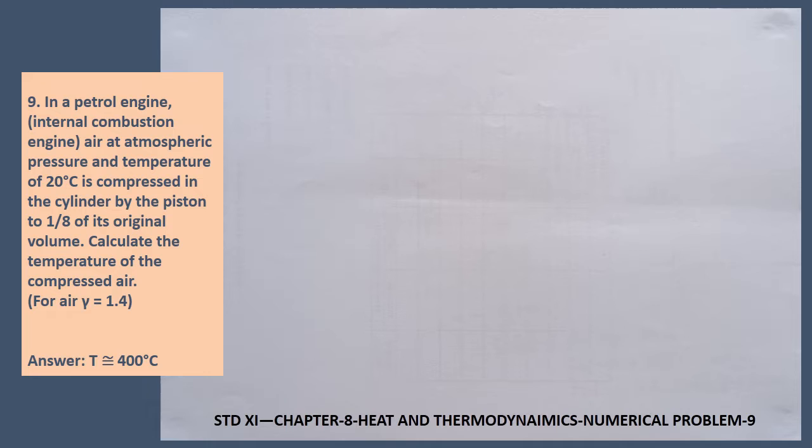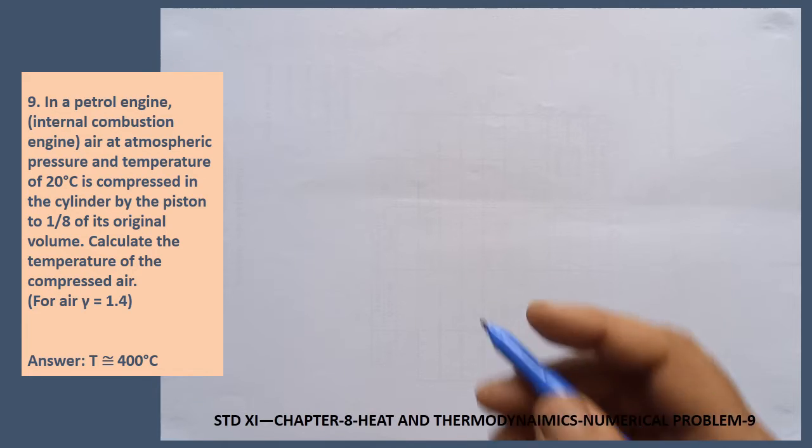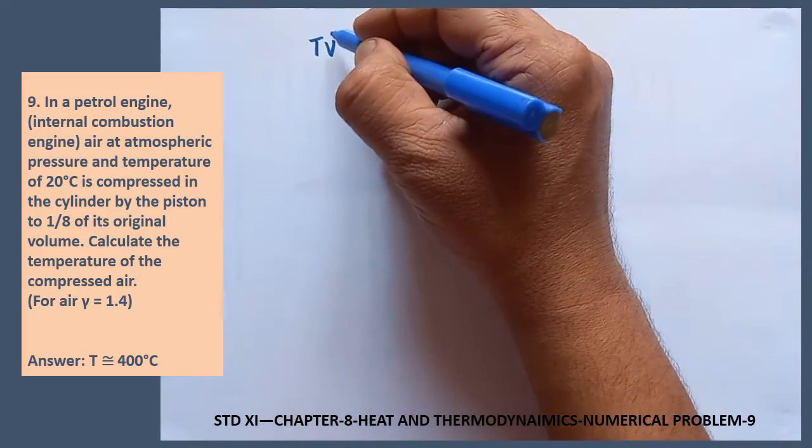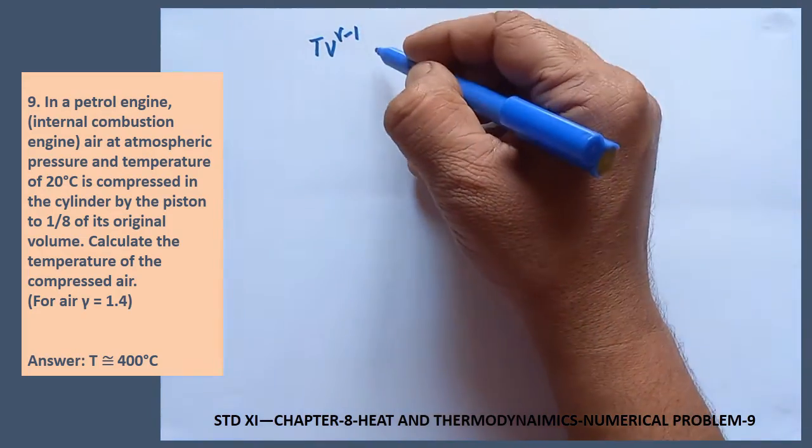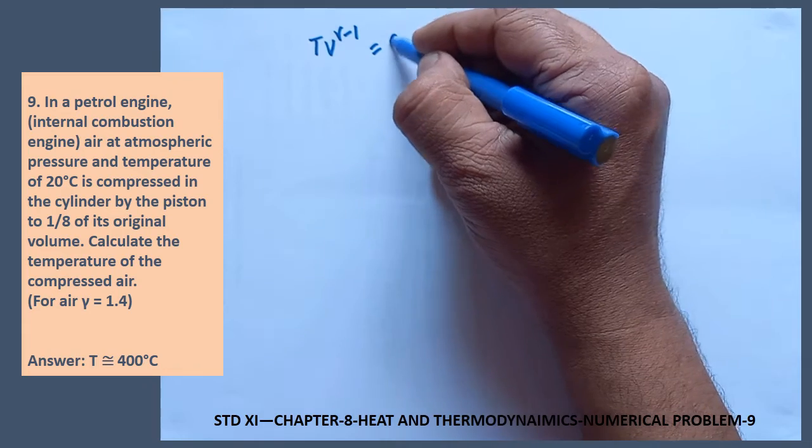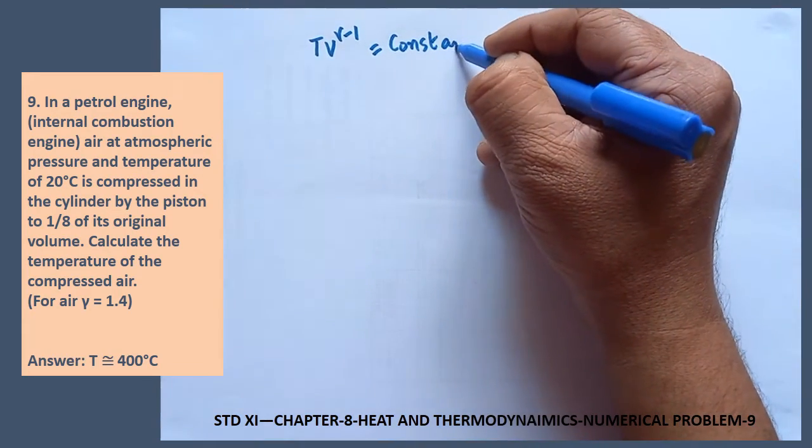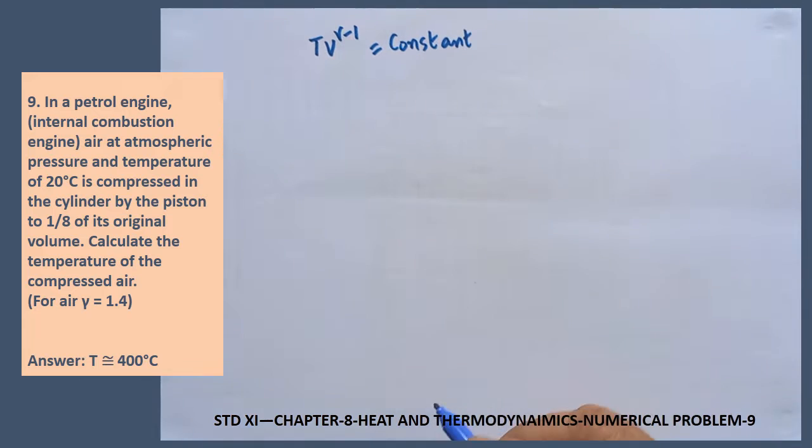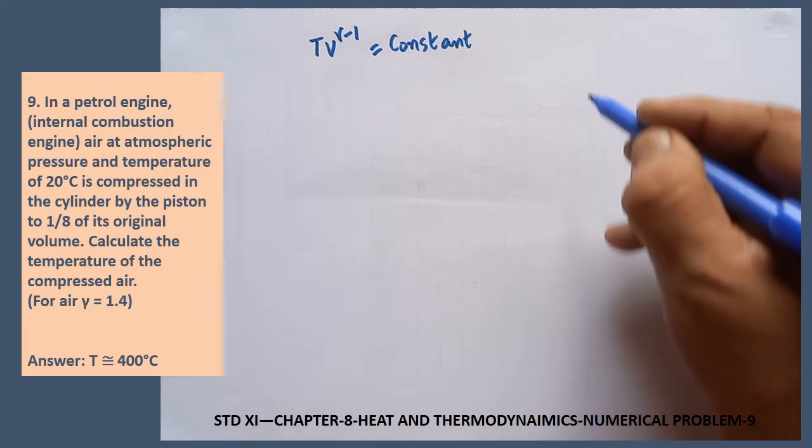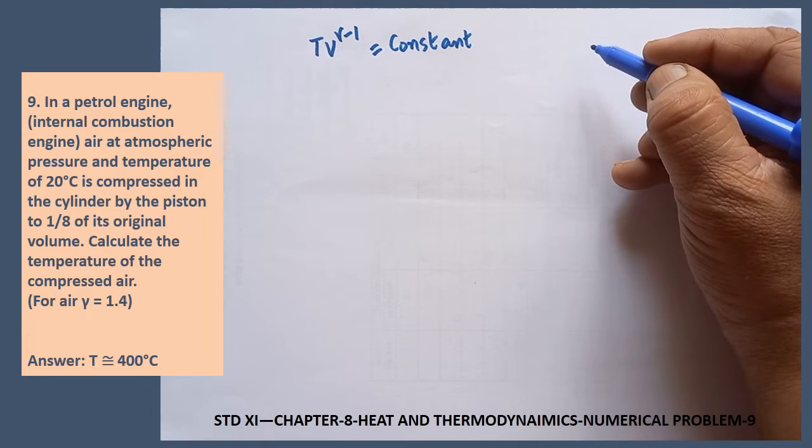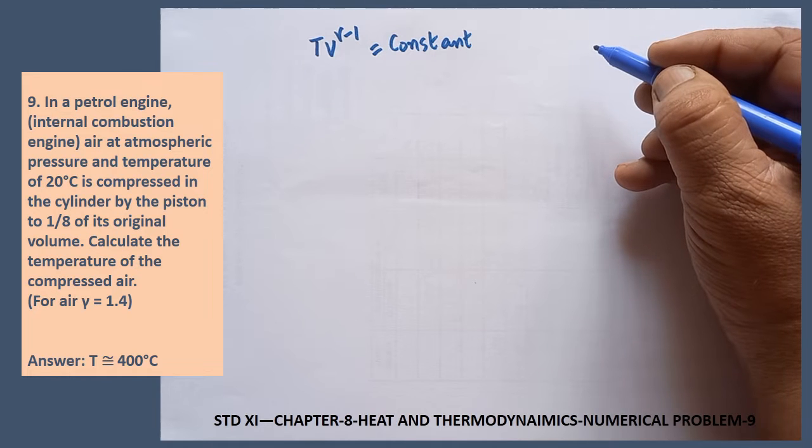Now, we have to use the equation Tv gamma minus 1 is equal to constant. This is one of the equations of adiabatic process. So what is mentioned in the problem? The volume of the gas is compressed.